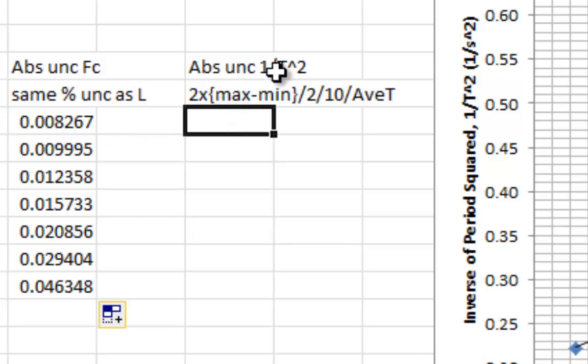That's the easier one. The harder one is the absolute uncertainty on each inverse of the period squared. This comes from the maximum and minimum subtracted, divided by 2.